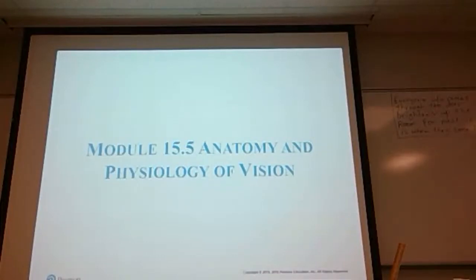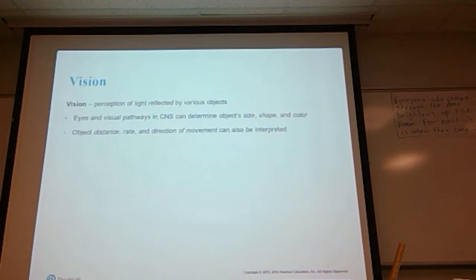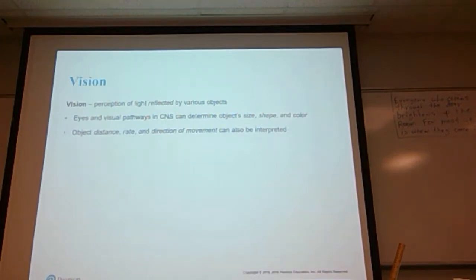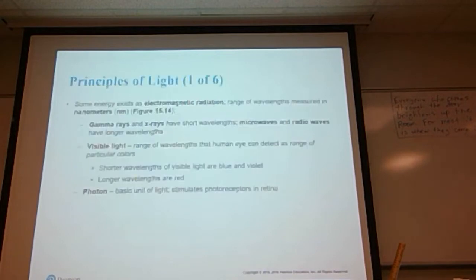Let's pick back up with anatomy and physiology of vision. Vision is the perception of light reflected by various objects. The eyes and visual pathways in the central nervous system can determine an object's size, shape, and color. We can detect objects at a distance, detect the rate they are moving, and the direction of movement can also be interpreted by the neurons of the central nervous system.